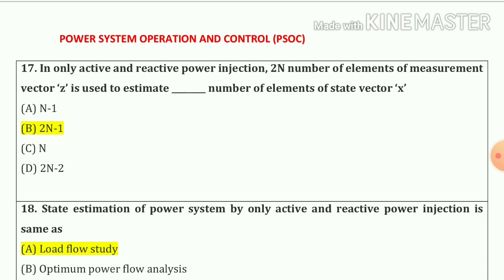Question number 17: In only active and reactive power injections, 2n numbers of elements of measurement vector z are used to estimate (2n minus 1) numbers of elements of state vector x. So our answer is option number b.